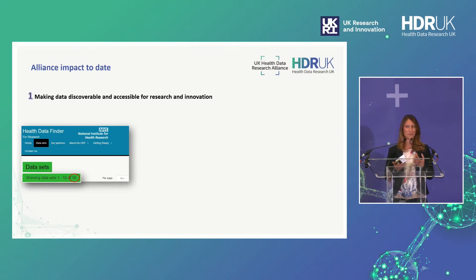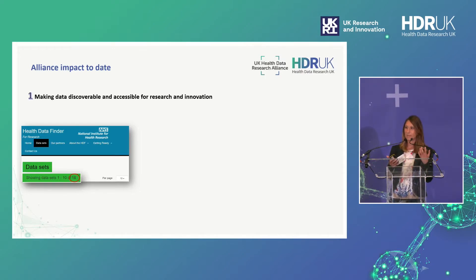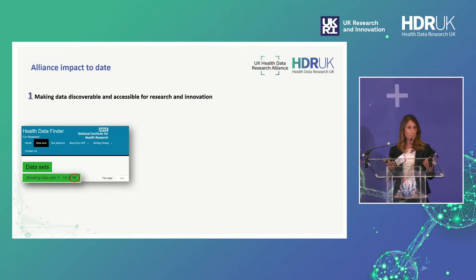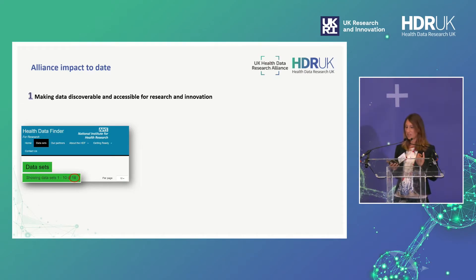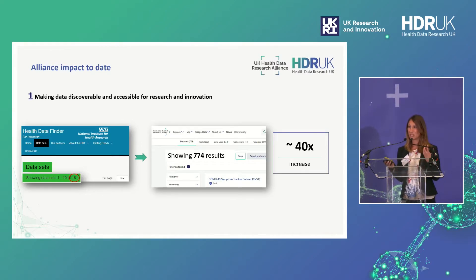What is the Alliance's impact to date? I'd like to spend a couple of minutes on two or three slides telling you about the work so far. The first thing Alliance members do is making data discoverable and accessible — this is done via the Innovation Gateway. Back in 2019 there was the NIHR Health Data Finder with 18 datasets on that portal. Today we have more than 700 datasets discoverable from UK Health Data Research Alliance members, which is a significant increase.